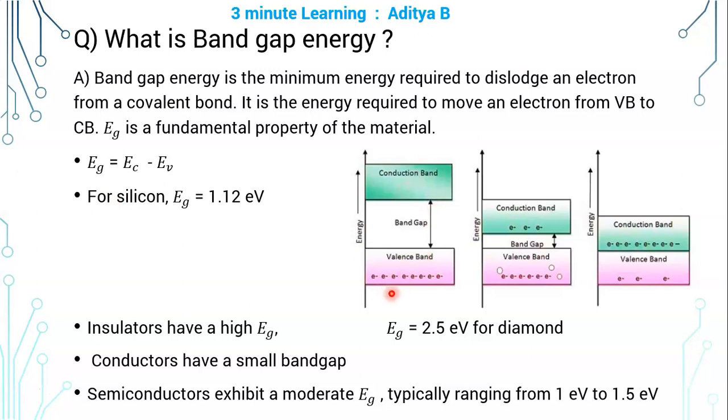If you see the energy band gap diagram, this is the valence band, this is the conduction band, this is the band gap. The difference in the energies between valence band and conduction band is the band gap energy.